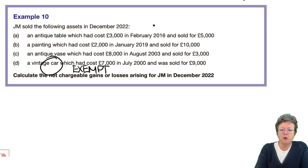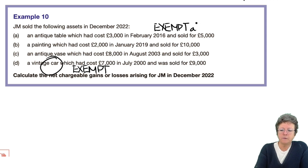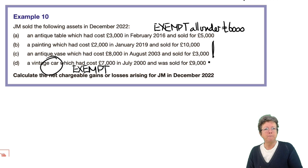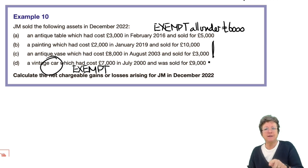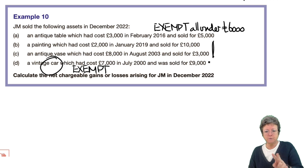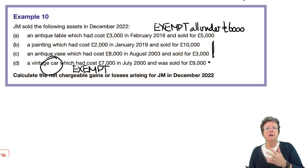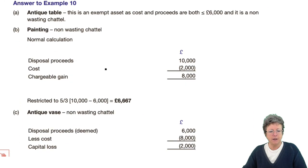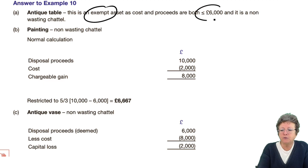Did you get these right? The top one — the antique table — is also exempt because it's all under the £6,000 limit. So how many calculations are we actually going to have to do? Only two out of four. Don't ignore A or D — tell the examiner why the table is exempt, tell the examiner why the car is exempt, and then do two calculations. Don't ignore things that are exempt. You know the rule — put the rule down, apply it to the question, and you will get marks for that. The table is exempt because both cost and proceeds are all under £6,000, and the car is exempt.